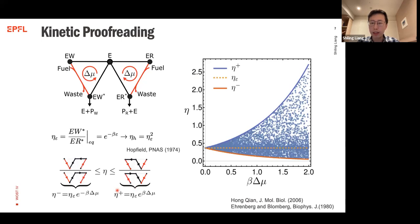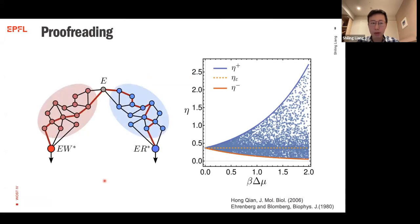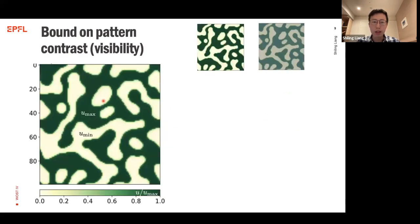We can fix the total chemical potential difference μ, randomly choose kinetic parameters, and verify that the error rate is well bounded by these upper and lower bounds. These two bounds are not entirely new — they have been found in previous papers — but our reaction pathway interpretation is intuitive and helps clarify what is physically happening. In more complex proofreading networks, where kinetic details are unknown, we can still determine the thermodynamic bounds solely from thermodynamic properties by enumerating all reaction pathways.